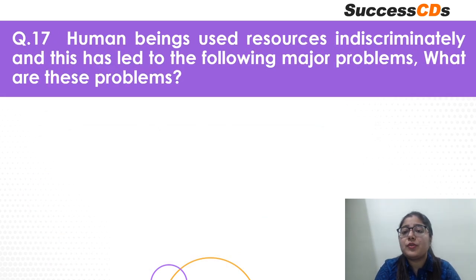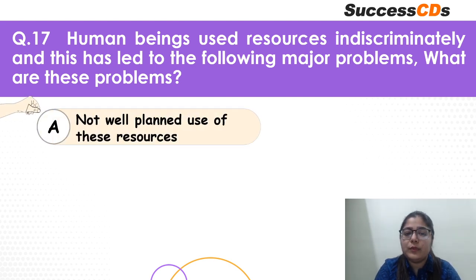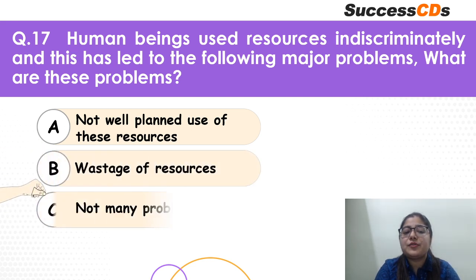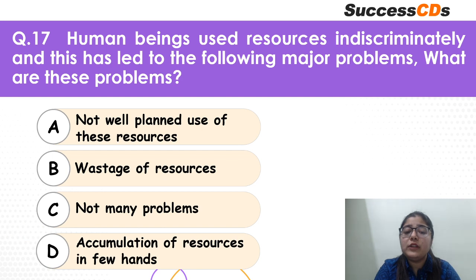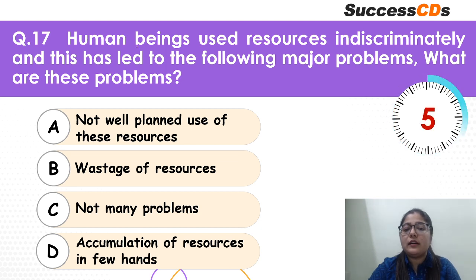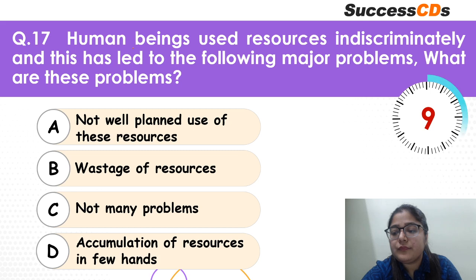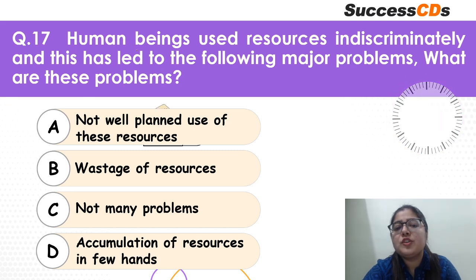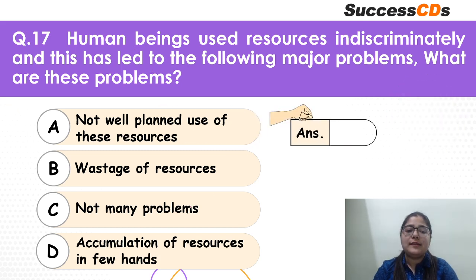Coming to question 17: human beings have used resources indiscriminately and this has led to major problems. What are these problems? Not well-planned use of resources? Wastage of resources? Not many problems? Or accumulation of resources in few hands? This is a tricky question — please think. The correct answer is D.